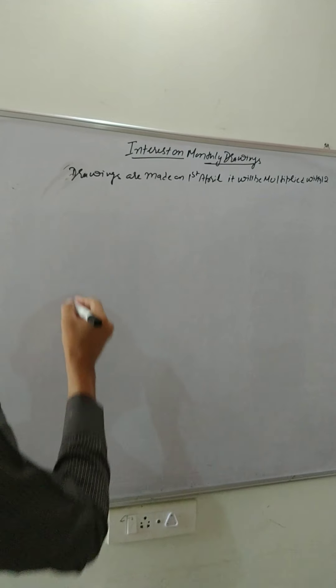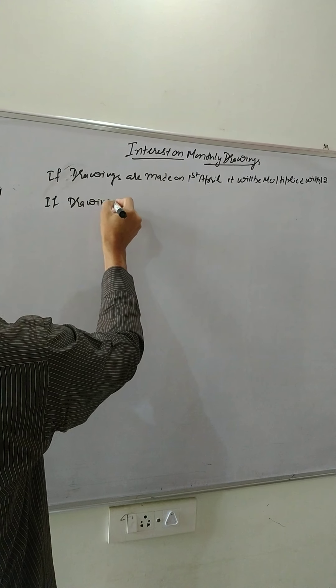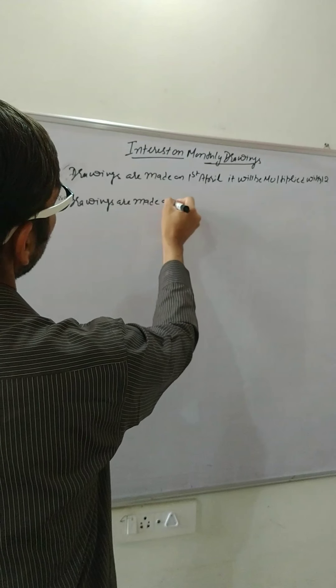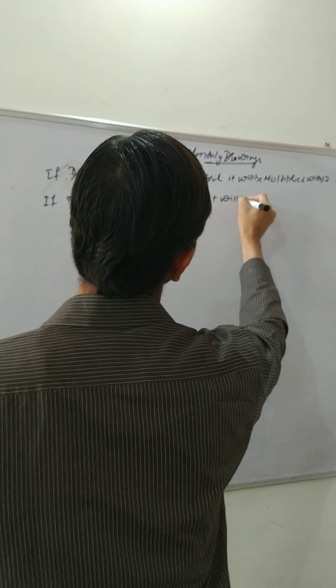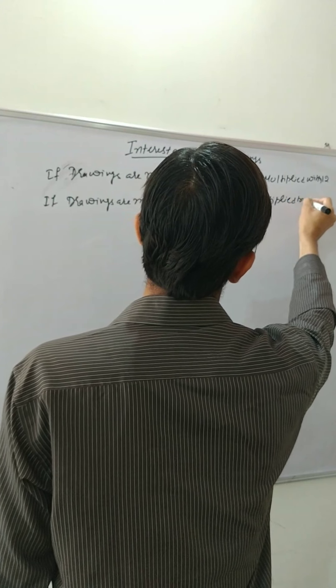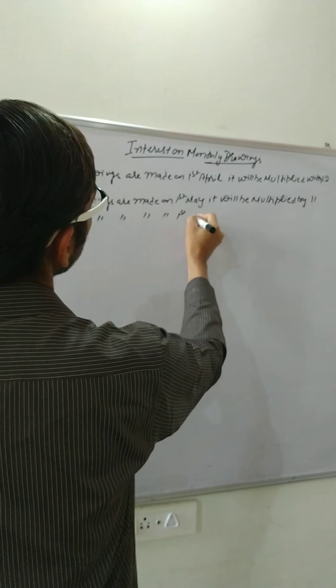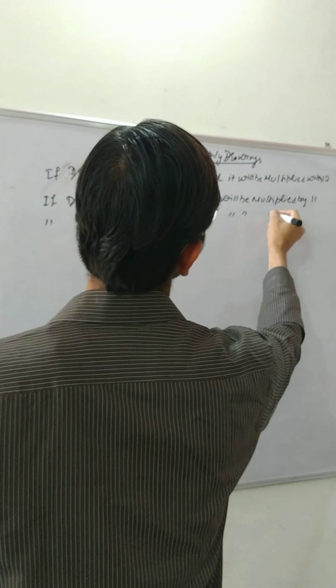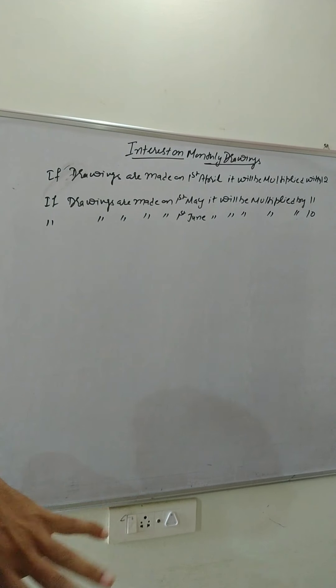If drawings are made on 1st May, it will be multiplied by 11. If drawings are made on 1st of June, and so on so forth. So we will find out the product and then we will use the product method, that is total amount into 1 by 12 into rate of interest.